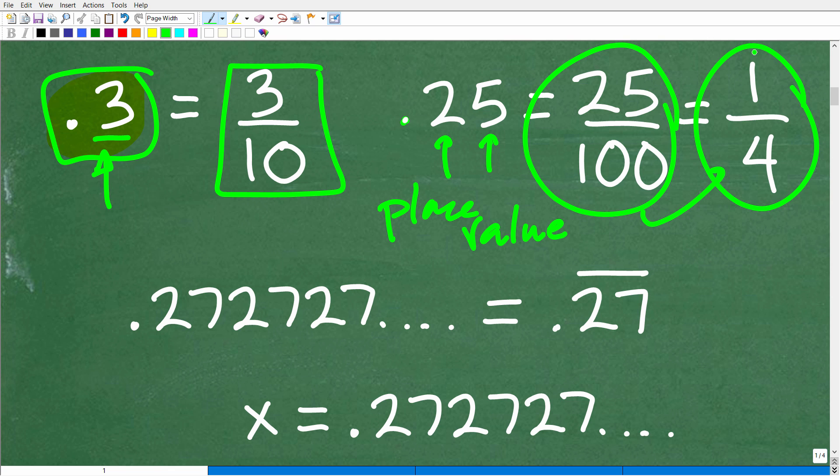So as we see here, there are decimals, plenty of decimals that have direct fraction equivalents. Now of course, there are other decimals that do not, like the value of pi. So what is this procedure that I'm going to show you? Well, I'm going to show you it right now.